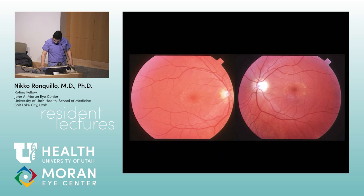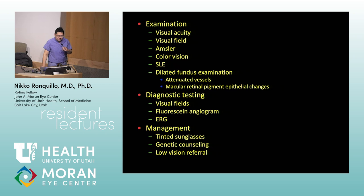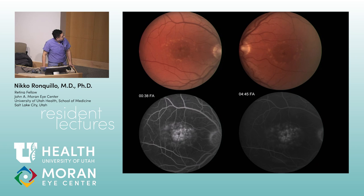Next — bullseye maculopathy from cone dystrophy. Relevant mutations for cone dystrophy include GUCY2D (GCAP genes). These mutations often appear as answer choices in OCAPS.